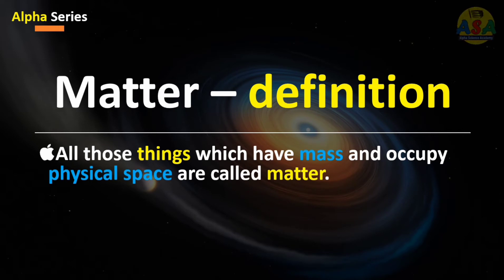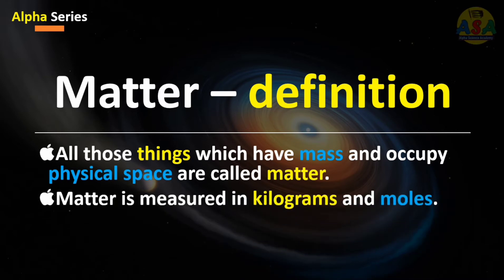which have mass and occupy physical space are called matter. Matter is measured in kilograms and moles. That is, there are two units to measure the amount of substance or the amount of matter: number one, kilograms, and the second one is moles.